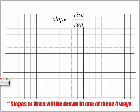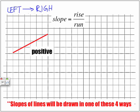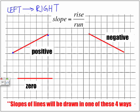Slope is equal to rise over run, and slopes of lines will be drawn in one of four ways. Slopes can be positive — when we read from left to right and the line goes upward, we have a positive slope. When a slope goes in a downward position moving from left to right, we have a negative slope. A straight horizontal line has a slope equal to zero, and a vertical line has what we call an undefined slope.